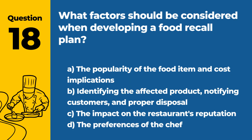Question 18: What factors should be considered when developing a food recall plan? a. The popularity of the food item and cost implications. b. Identifying the affected product, notifying customers, and proper disposal. c. The impact on the restaurant's reputation. d. The preferences of the chef. Answer: b. A food recall plan should consider how to identify the affected product, notify customers, and properly dispose of or return the product.